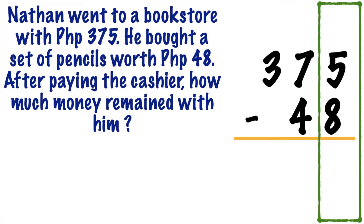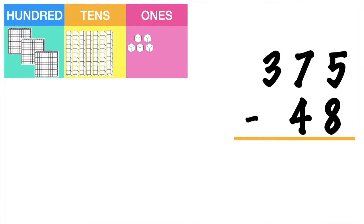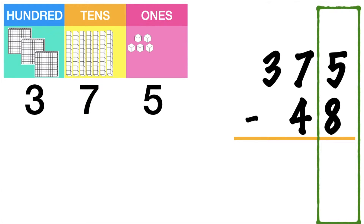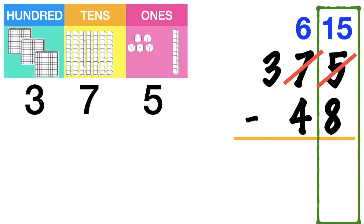But before that, I want you to see this illustration. So I have here 375. Since we have 5 minus 8, where 5 is smaller than 8, we cannot subtract them. That's why we're going to use the process of regrouping. We regroup 1 ten from the tens place and add it to the ones place. So 5 will become 15 and 7 will become 6.